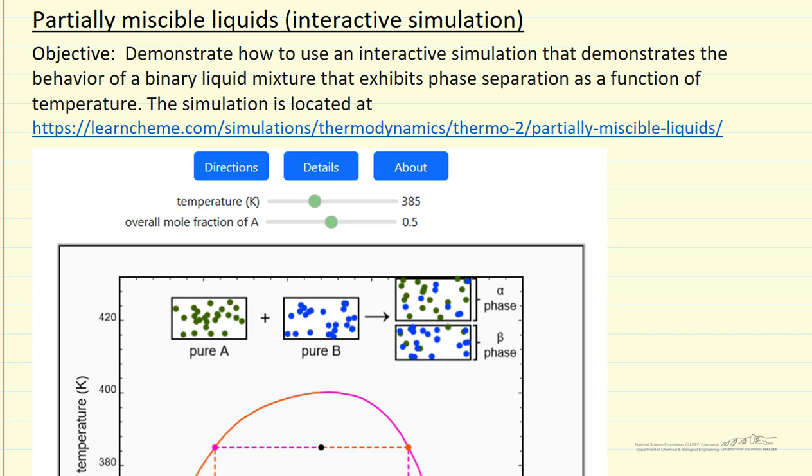In this screencast, I'm going to briefly describe how to use an interactive simulation for partially miscible liquids. In this simulation, there are two liquids that we mixed, but they only completely mixed over a certain composition and temperature range.